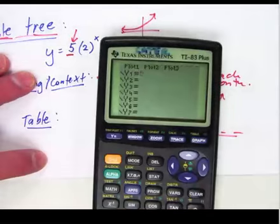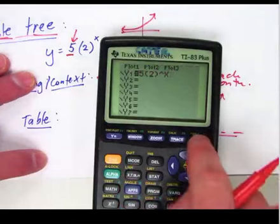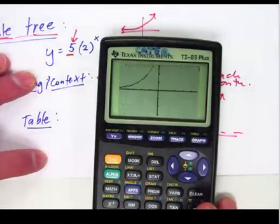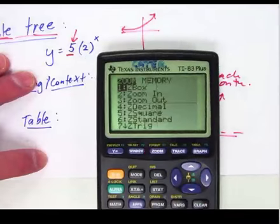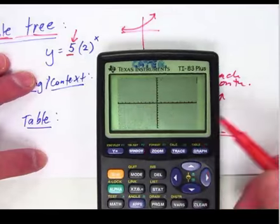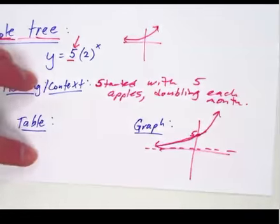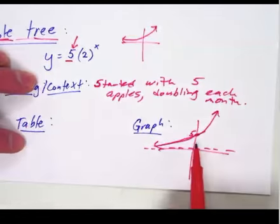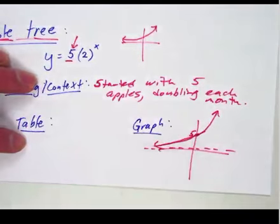Now, we can confirm that and find the table values too by plugging it into y equals. So if I go y equals 5 times 2 to the x power and hit graph, I can see the graph here. It looks like my window setting isn't showing that 5, so I'll go zoom 6 or zoom standard. And when I do a zoom 6 or zoom standard and then go into my y equals,